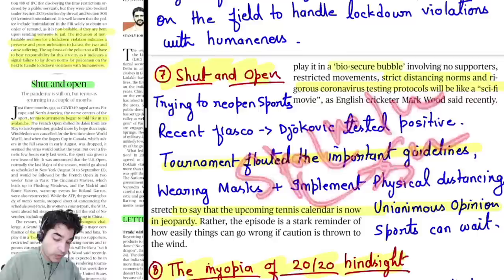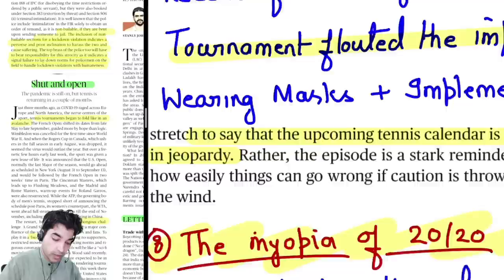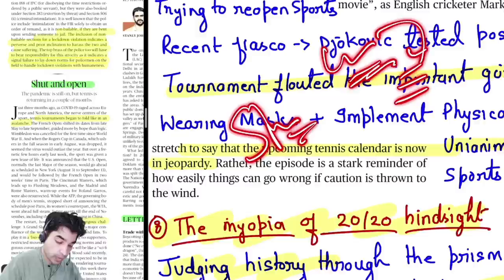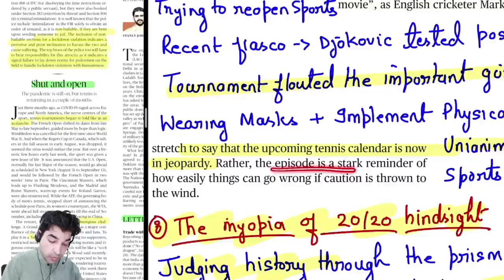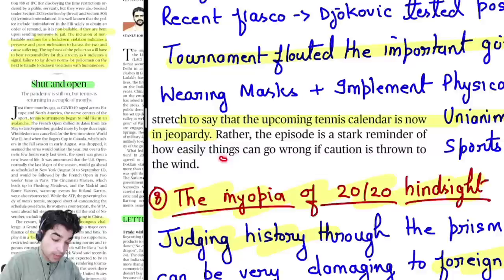The essential elements of sport — the soul of sport — are defeated in a bio-secure bubble. Wearing masks and implementing physical distancing must be ensured. A unanimous opinion is forming that sports, although necessary, can be postponed for the time being due to COVID-19 — that would not be a big deal. The upcoming tennis calendar is in jeopardy. The episode is a stark reminder: easily things can go wrong if caution is thrown to the wind — saavdhani hati, durghatna ghati.